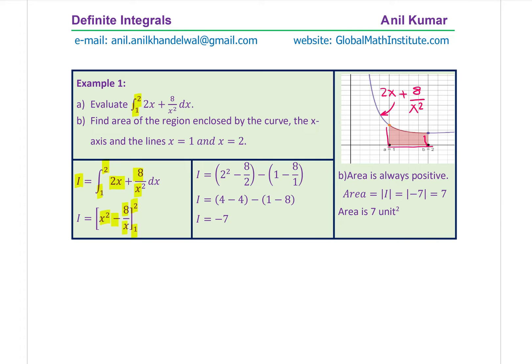The convention means we evaluate the integral at 2 and then at 1, and the difference is the value. Substituting 2 for x and then 1 for x, the difference of the two gives us the integral. On calculations, we find 4 minus 4 is 0 for the first part. For the second part, 1 minus 8 gives minus 8, and the minus and minus becomes positive, so this is positive 7.